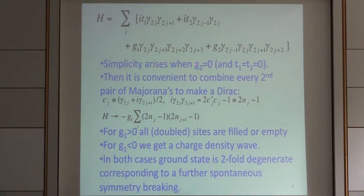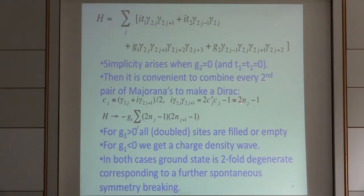Now we have a model we can finally easily solve. The way we solve it is to combine pairs of Majoranas to make a Dirac. If we combine the Majorana on site 2j and the Majorana on site 2j+1, the Hermitian and anti-Hermitian parts form a Dirac operator. The nearest-neighbor product is just twice the number operator c-dagger_j c_j minus 1, an operator with eigenvalues plus or minus 1. This actually reduces to the strong-coupling limit of the spinless fermion model.